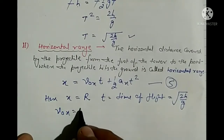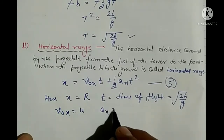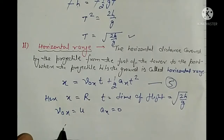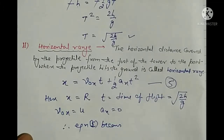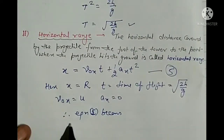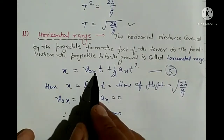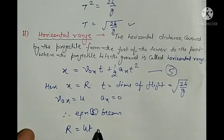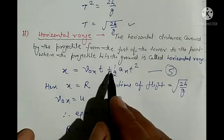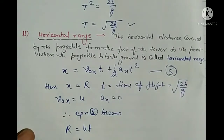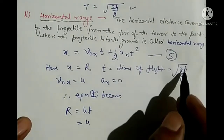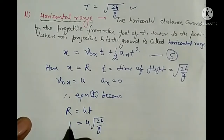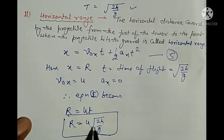V₀ₓ = u and aₓ = 0. So equation 5 becomes: R = u·T + 0, and substituting T = √(2h/g), we get R = u√(2h/g). This is the horizontal range formula.